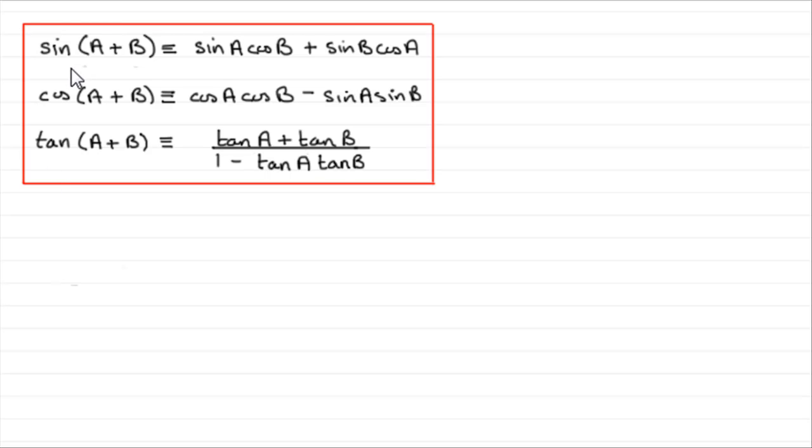Hi, now you should already be familiar with the compound angle formulae, or some people call it the addition formulae. What I want to show you in this tutorial is how we can build on these results and get what is called the double angle formulae. We do this by letting B equal A.